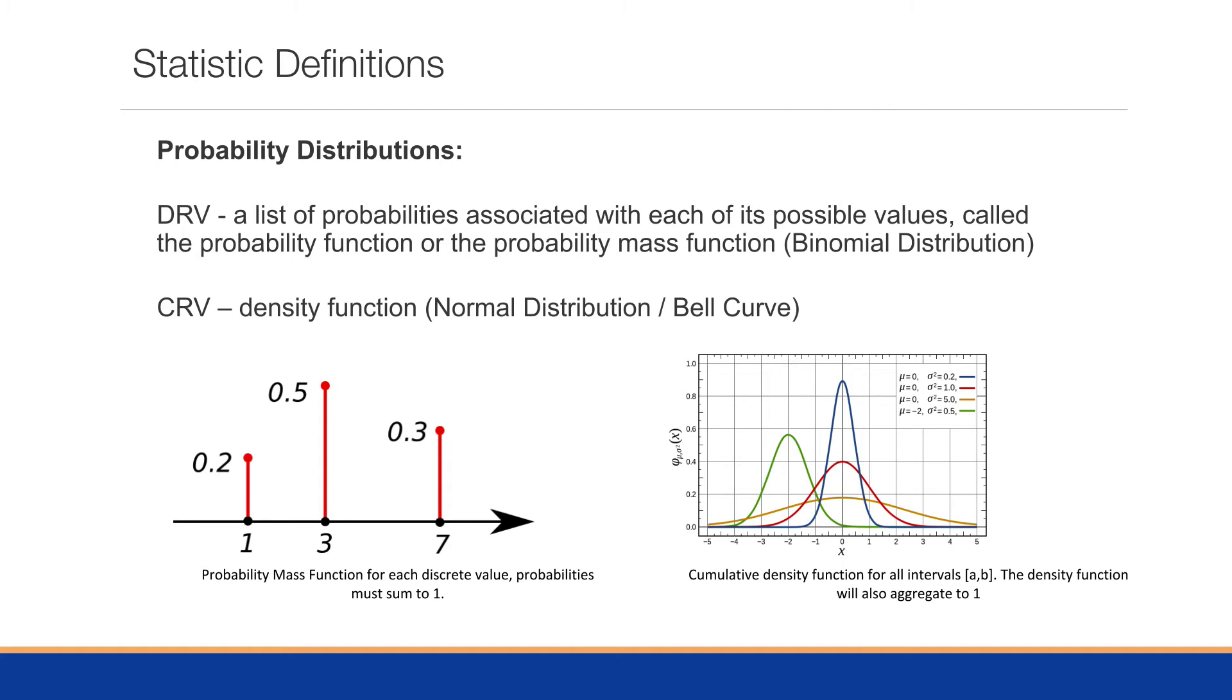For a continuous random variable, we have a density function. We'll say something like the normal distribution. And you can see the various elements of the normal distribution with different variances and different means.